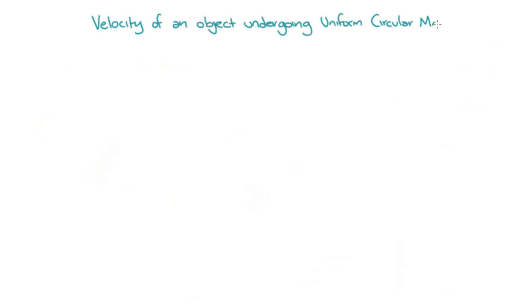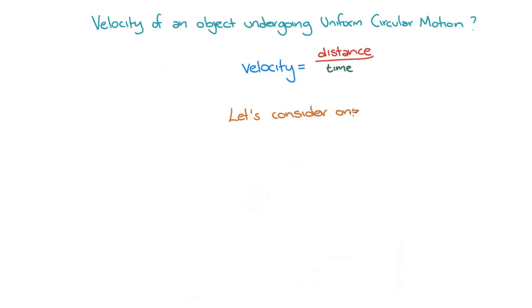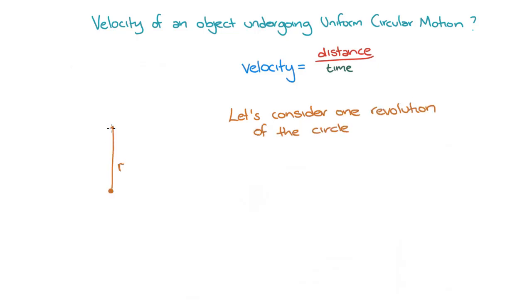Now we are going to come up with an expression for the velocity of objects undergoing uniform circular motion. For a constant velocity, the speed v is equal to the distance travelled divided by the time taken to travel that distance. So let's investigate one revolution, which is an object travelling once around the circle. We know that the distance the object has travelled is the circumference of the circle.